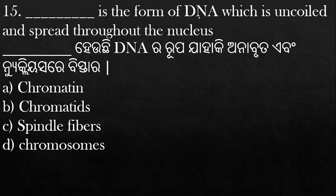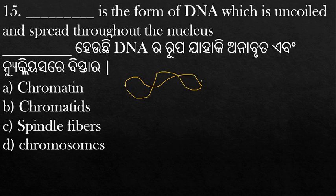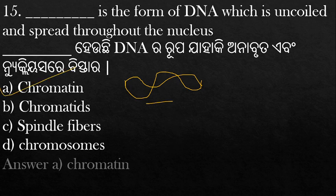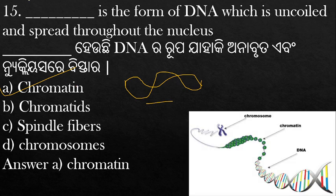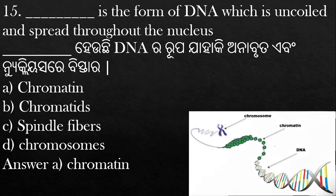Which form of DNA is uncoiled and spread throughout the nucleus? The answer is chromatin. Chromatin is the uncoiled form of DNA spread throughout the nucleus, as distinct from chromosomes.